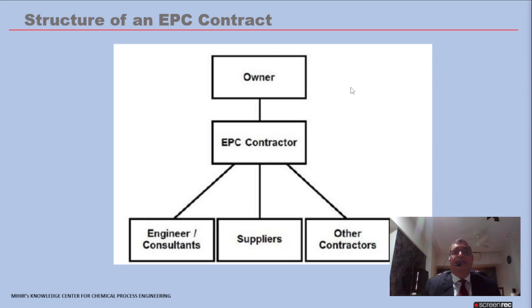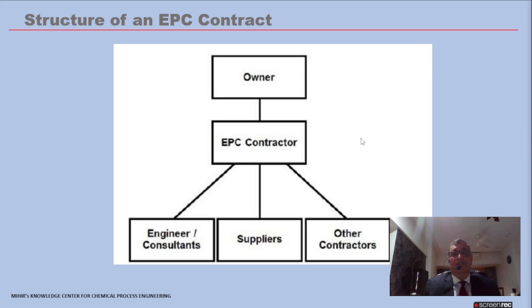In the EPC contract, the P&ID finalized at the budgetary pre-bid stage must be engineered further. The P&ID must be fit for purpose — gold plating must be minimized. Once the EPC contract is awarded, changes and gold plating on the P&ID must be kept to a minimum by the process engineer so that costs do not overrun the estimate from the previous stage.